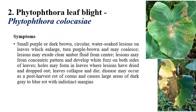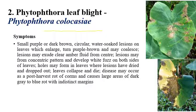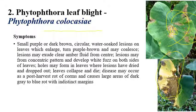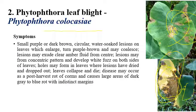The second disease is Phytophthora leaf blight, which is caused by Phytophthora colocasiae. Blighting of leaves can be clearly seen, along with shot holes on the leaves. Initially, small purple-brown color patches appear on the leaves. In later stages, these patches coalesce into very large patches, and a fuzzy appearance can be seen on both surfaces of the leaf.